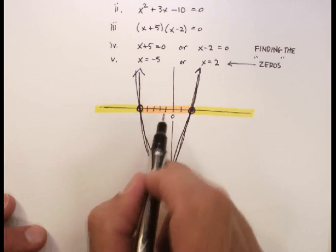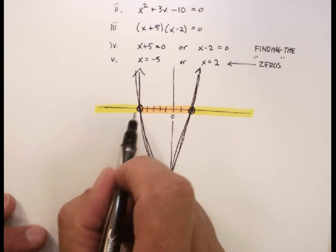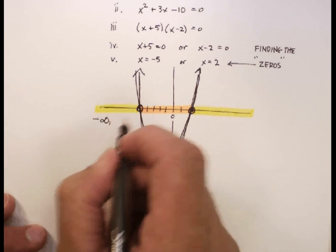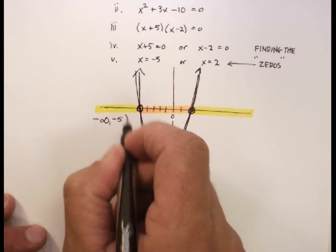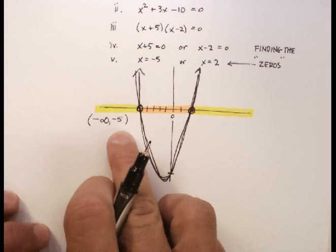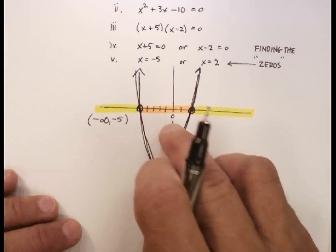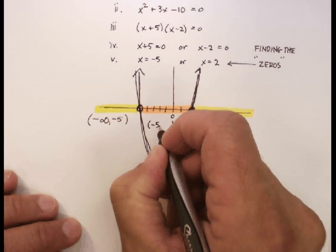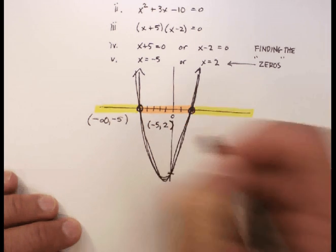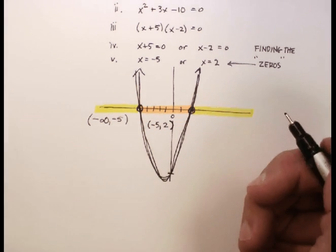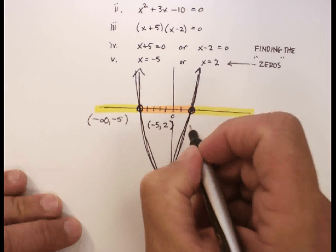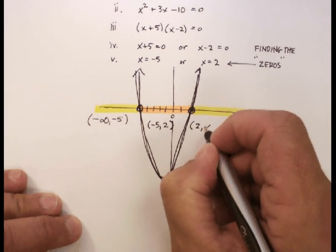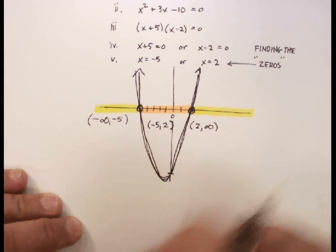But I've created three regions. And the first region is everything down here. It's everything from negative infinity all the way up to negative 5. And I'm going to use my interval notation and write it that way. In my middle region, I've got everything from negative 5 all the way up to positive 2. And I'm going to use interval notation for that. And in my third region, I've got everything from positive 2 all the way up to positive infinity. And again, I use my interval notation for that.